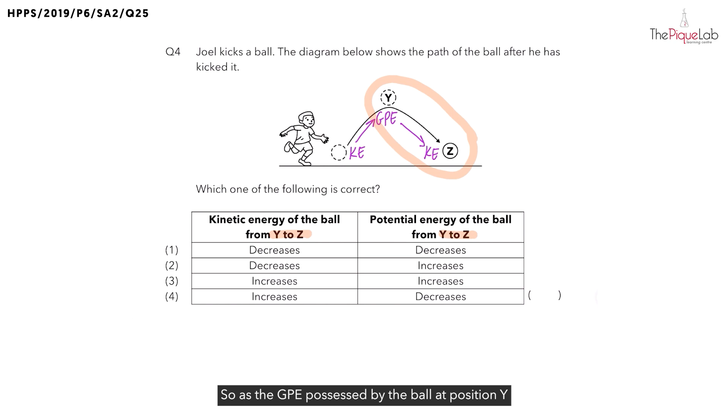So as the GPE possessed by the ball at position Y is being converted to kinetic energy of the ball at Z, what should happen to the amount of kinetic energy? Should it increase or decrease? The amount of kinetic energy should increase.